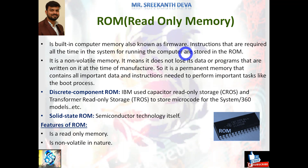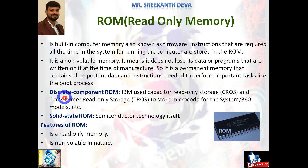ROM chips are also used in calculators, washing machines, microwaves, and similar devices. Instructions stored in ROM execute as soon as the computer is switched on. In ROM, it is not possible to randomly store or access information. This is the basic introduction about ROM. Historically, IBM used capacitors — read-only storage (CROS) and transformer read-only storage (TROS) — to store microcode for the System/360 models. Later, solid-state ROM using semiconductor technology was introduced.